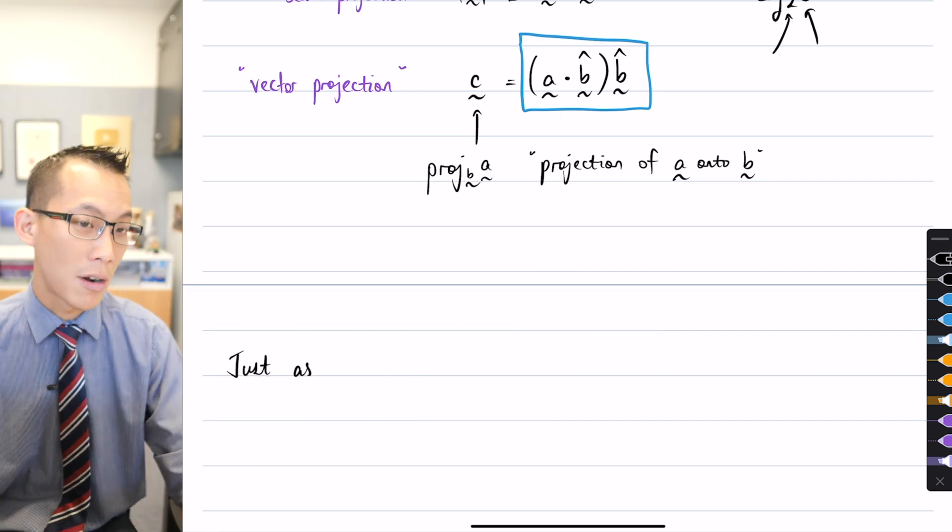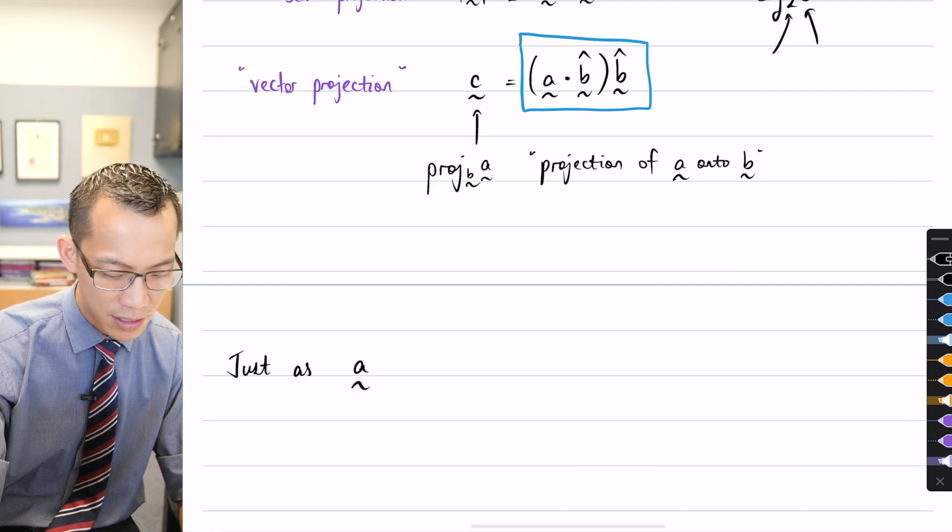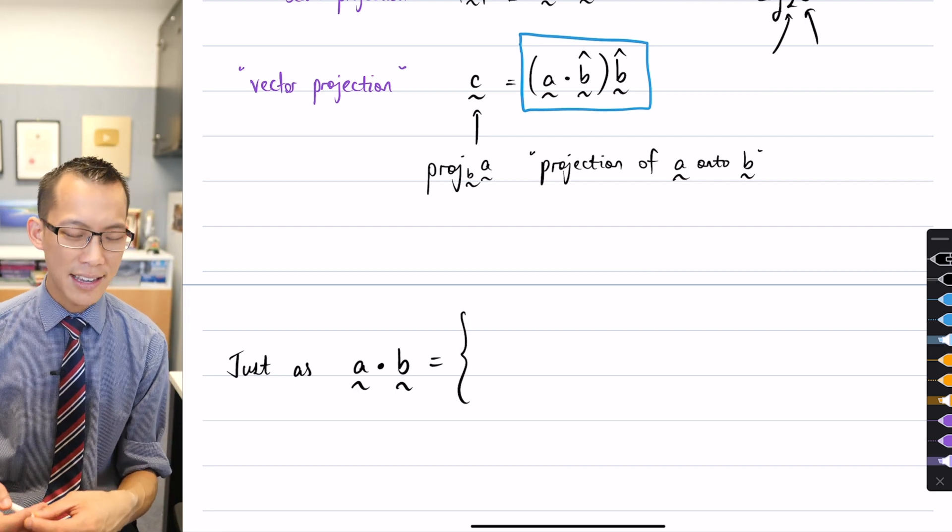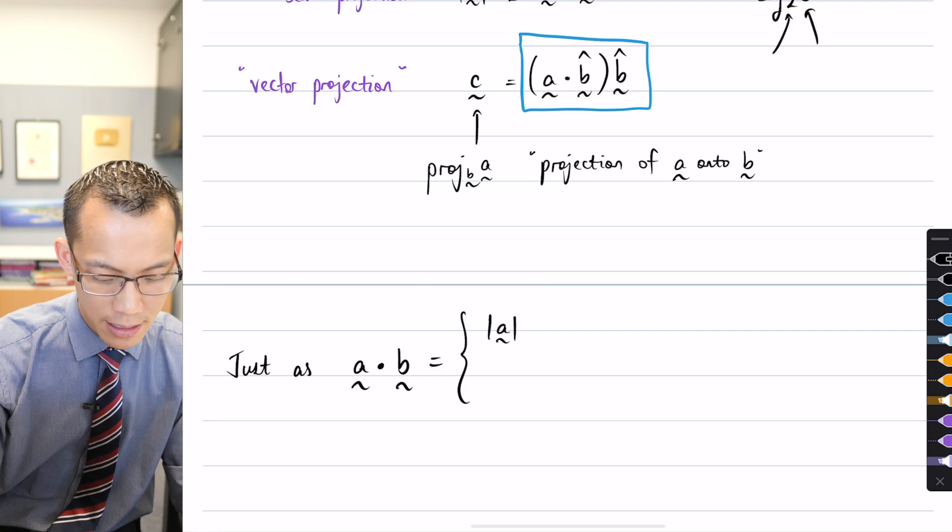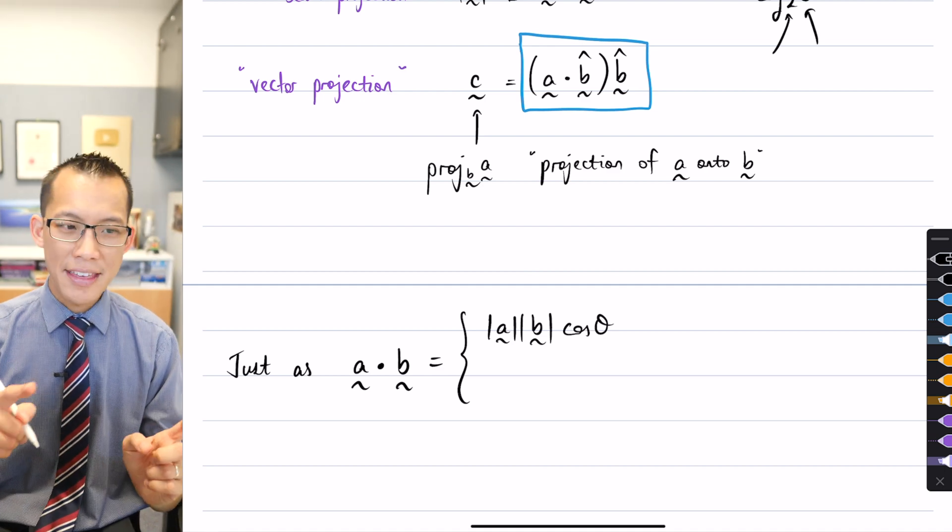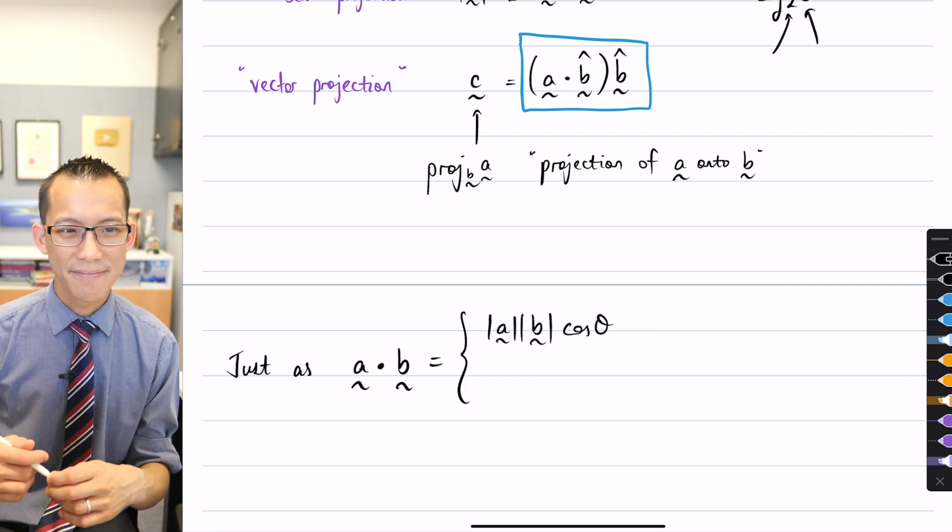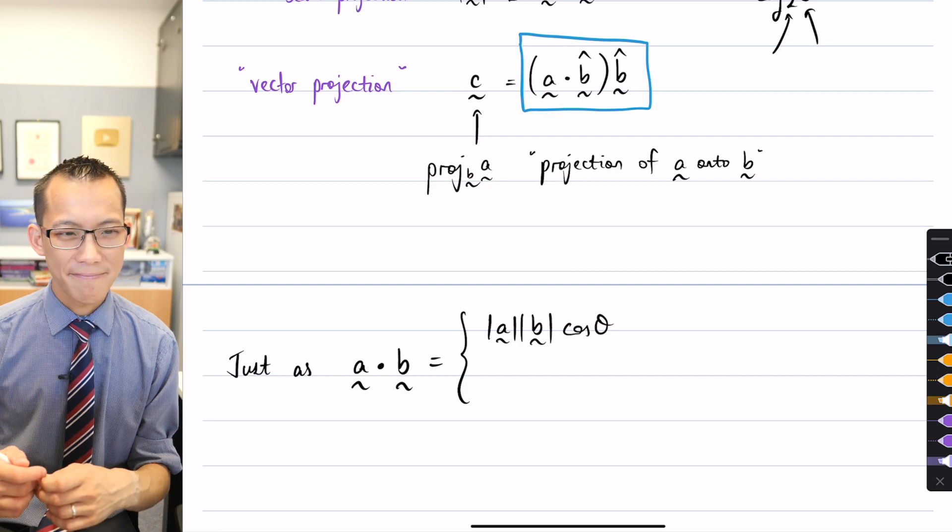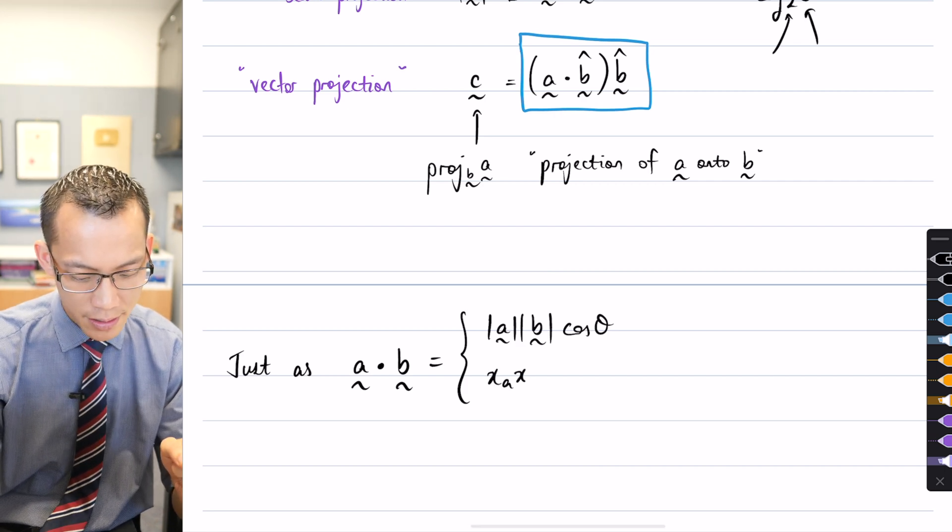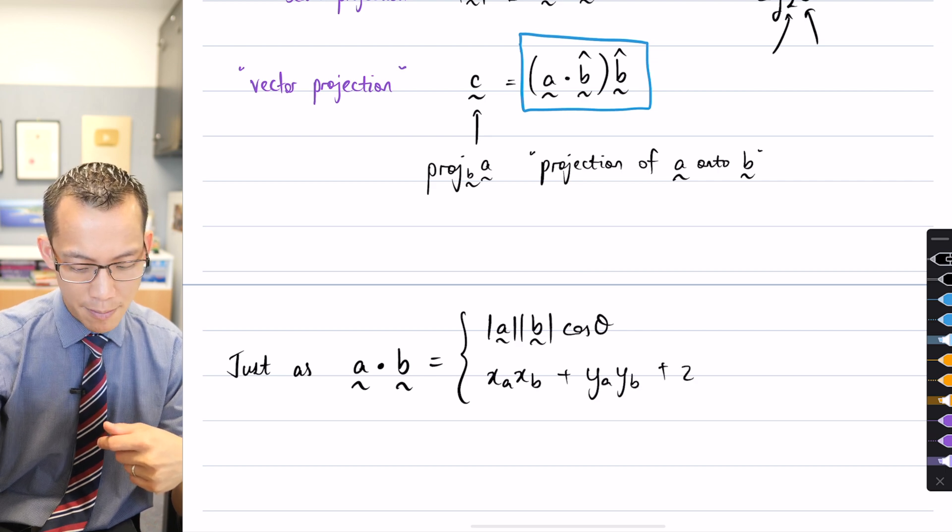We've also seen this before with the dot product itself. The dot product has more than one way to be calculated. We proved how these two formulas are equal to each other, but it really depends on what information you have access to. So the definition we've already just used today, what you need is the magnitudes of the two vectors and the angle in between.